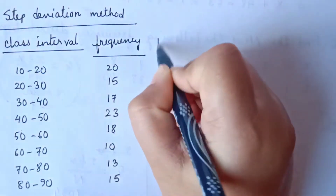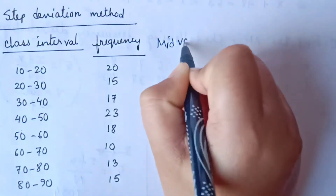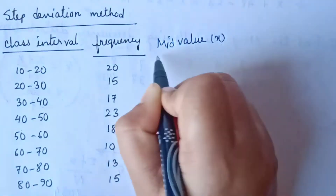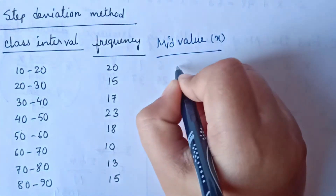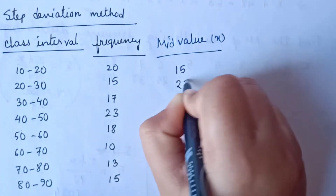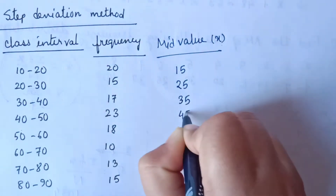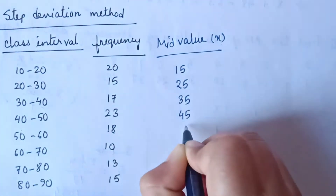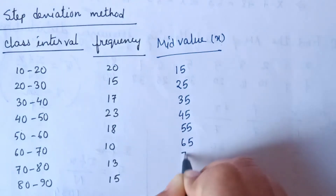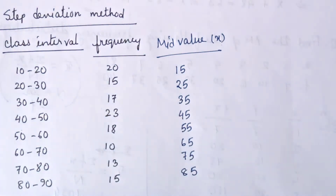First we find out the mean values. The mean value is denoted by x: 15, 25, 35, 45, 55, 65, 75, 85.